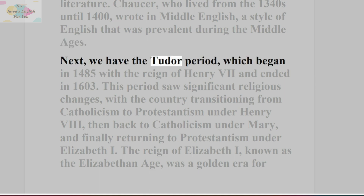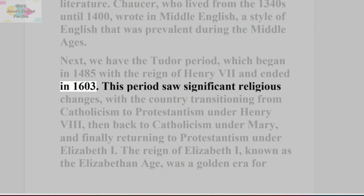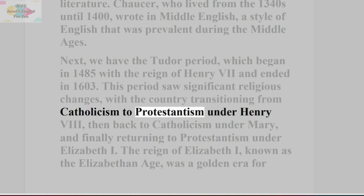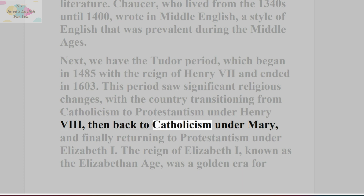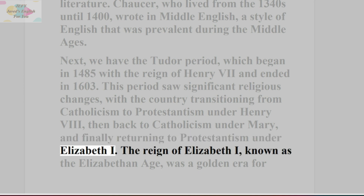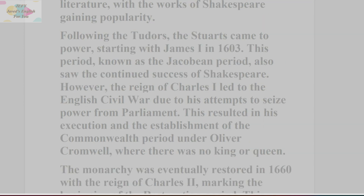Next, we have the Tudor Period, which began in 1485 with the reign of Henry VII and ended in 1603. This period saw significant religious changes, with the country transitioning from Catholicism to Protestantism under Henry VIII, then back to Catholicism under Mary, and finally returning to Protestantism under Elizabeth I. The reign of Elizabeth I, known as the Elizabethan Age, was a golden era for literature, with the works of Shakespeare gaining popularity.